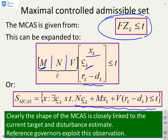The other thing you might want to be reminded of is that the shape of the MCAS clearly depends upon what values you put in for R minus D. And strategies like reference governors exploit this observation in order to ensure feasibility.